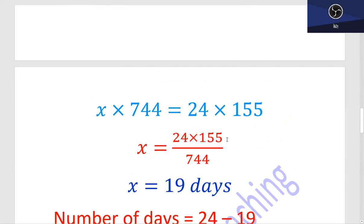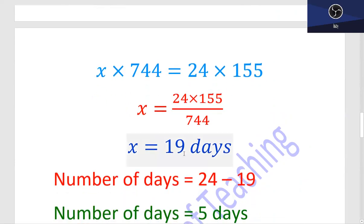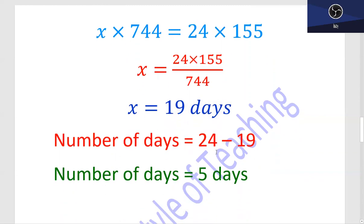Now we multiply 24 into 155 and divide by 744. So 19 days - 19 days is for the 589 meter track. With 24 days total, we have 19 days of consumption, and the remaining number of days is 5.